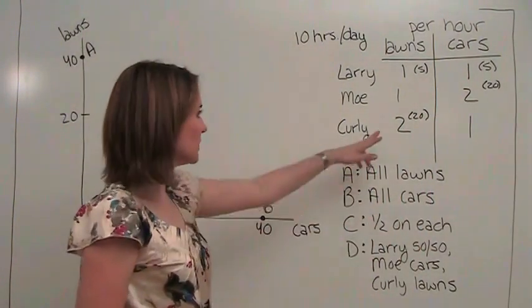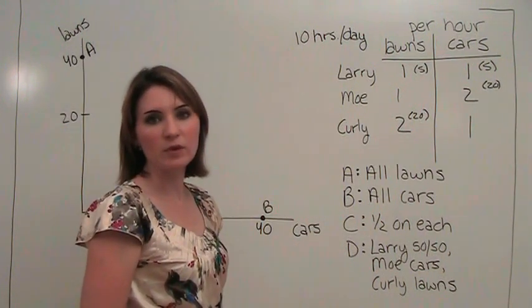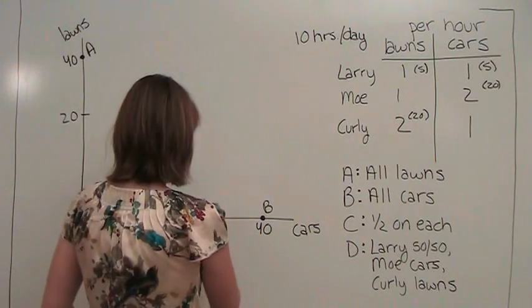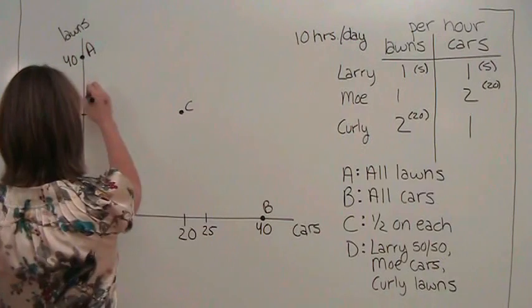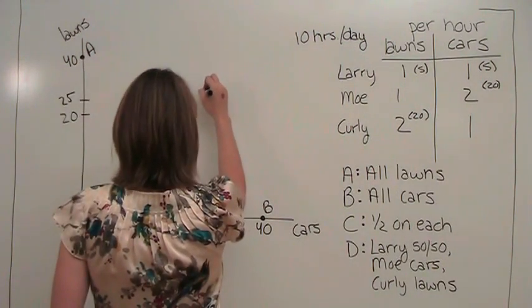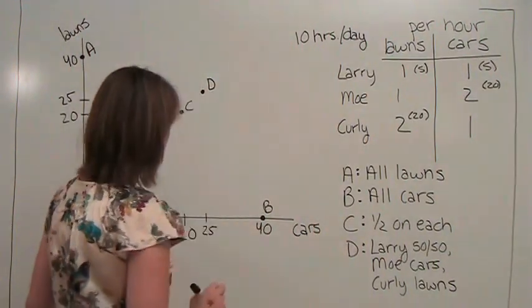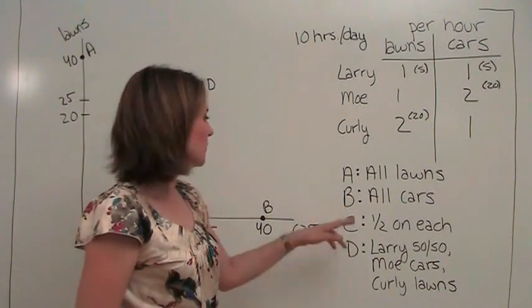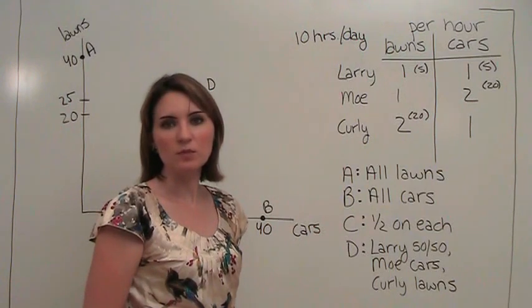Now this gives us a different point. We get to a point where there are twenty-five cars being washed and twenty-five lawns being mowed. That's interesting. If we move from point C to point D, we're actually able to produce more of each good.